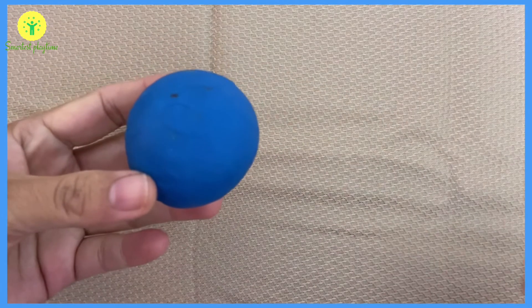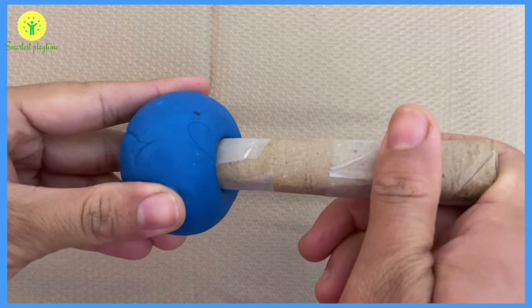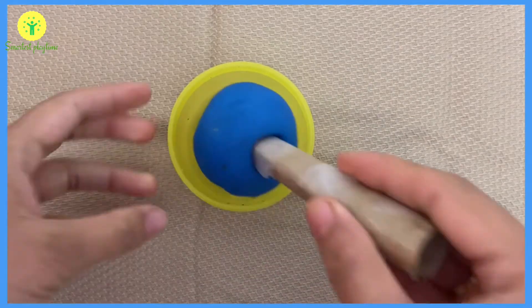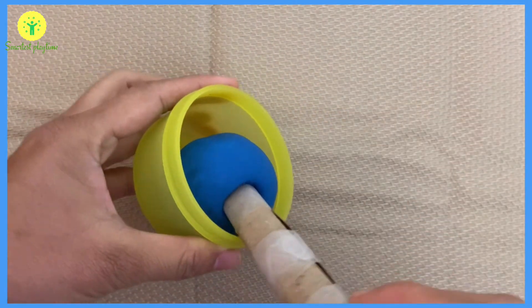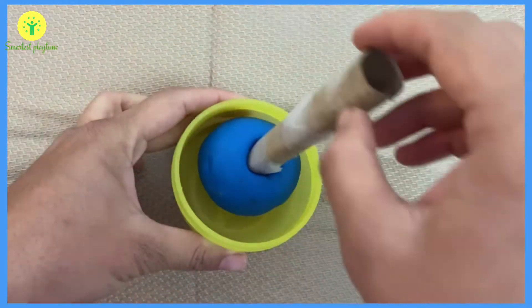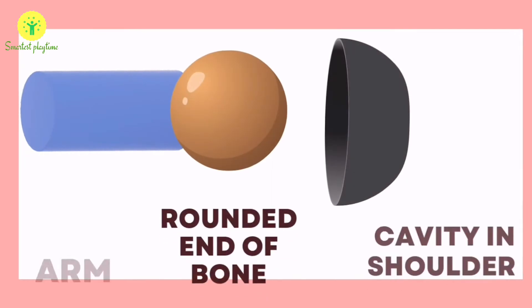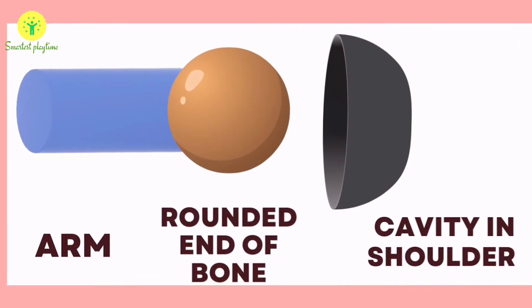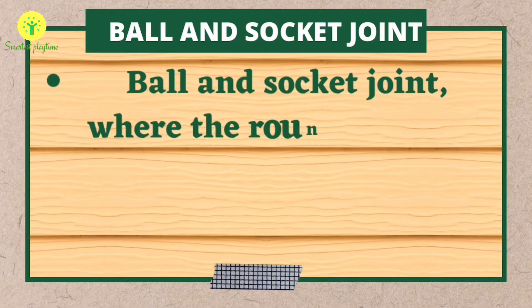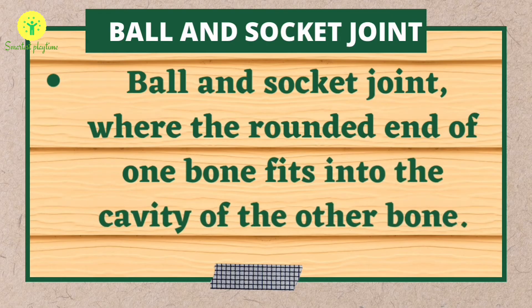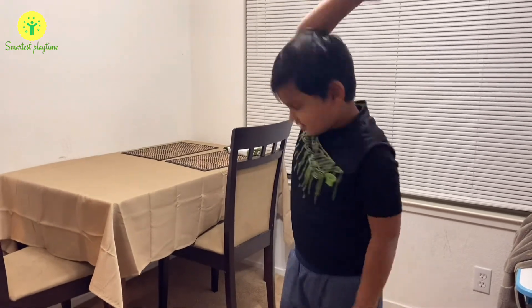Make a small ball with play-doh, or you can take an old rubber or plastic ball. Push a paper cylinder into the ball and keep it in a small cup. Now try to rotate the ball — you will find that it rotates freely. Imagine this paper cylinder is your arm bone, and the ball is its end, which connects to the shoulder. In this joint, the rounded end of one bone fits into the cavity of another bone. This type of joint is called a ball and socket joint, and it allows movement in all directions.